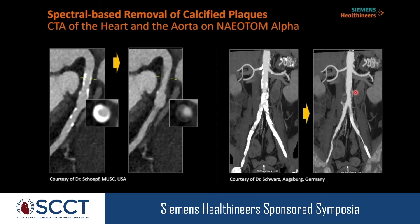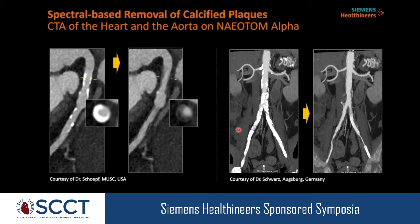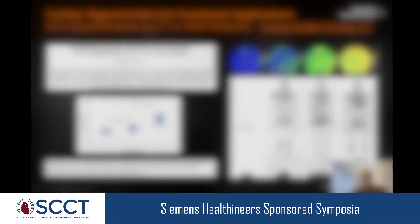Another example: a CTA showing heavy calcium in the coronary arteries — with the algorithm, calcifications are removed and a pure view of the lumen is obtained. Even more impressive is a patient with heavy aortic calcifications and a stent: after calcium removal using spectral techniques, a pure view of the remaining lumen is possible. Interestingly, the stent was also removed, but the remaining lumen is still clearly visible — something impossible to see in the original image.